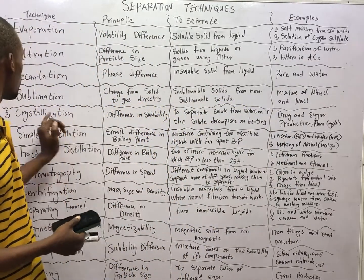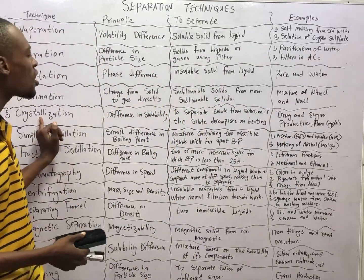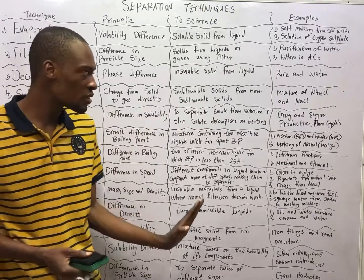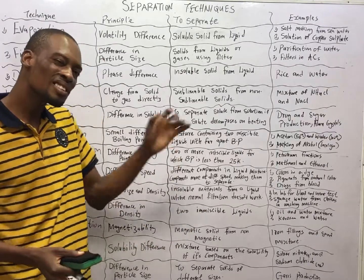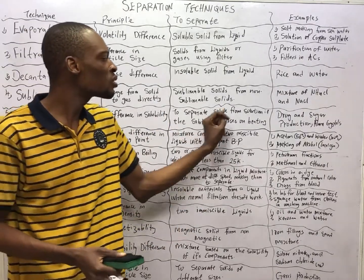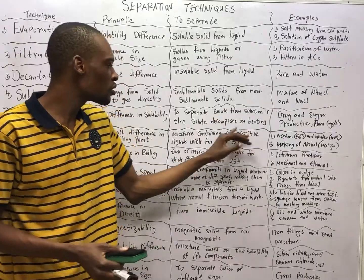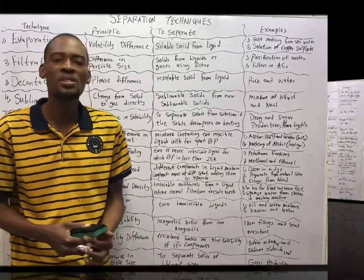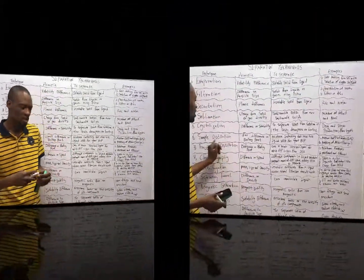Crystallization works on the principle of difference in solubility, and it is used to separate a solute from solution if the solute decomposes on heating.